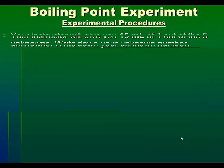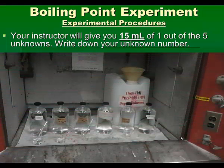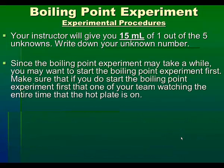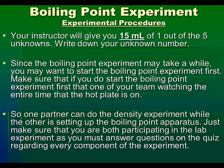Boiling point experiment — experimental procedures. Your instructor will give you 15 milliliters of one of five unknowns. Write down your unknown number. Your goal will be to identify which unknown you have. Since the boiling point experiment may take a while, you may want to start it first. Make sure that one of your team is watching the hot plate at all times. One partner can do the density experiment while the other sets up the boiling point apparatus. Make sure you're both participating, as you must answer questions on the quiz regarding every component of the experiment.